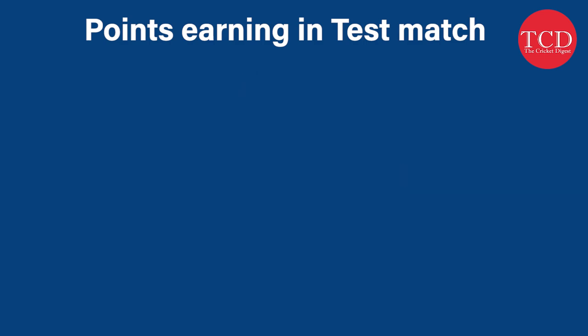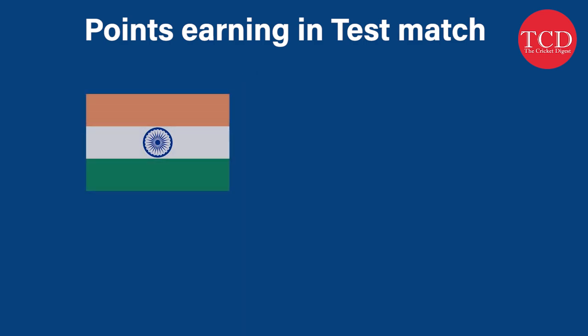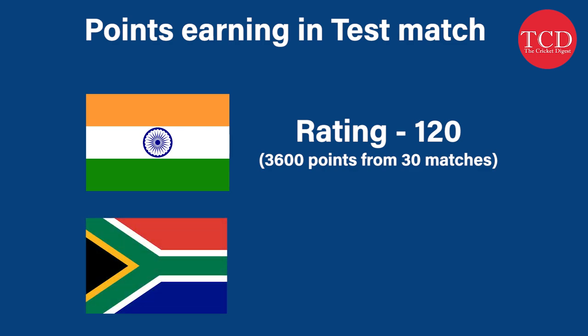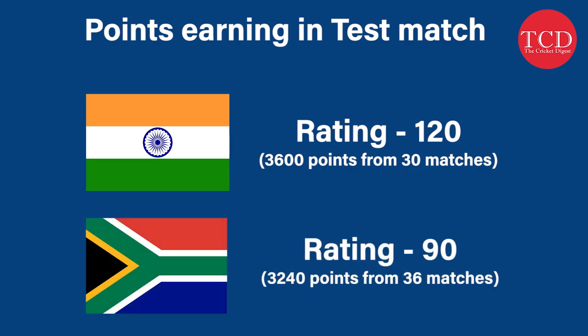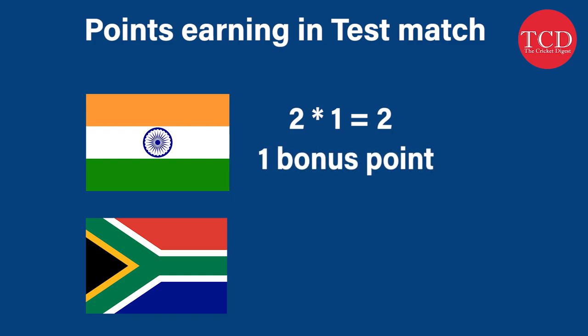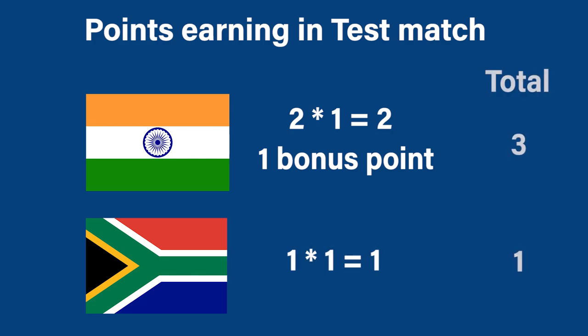Let's consider an example. At the start of the series, India has a rating of 120 and South Africa has 90. Let's assume that India wins the series 2-1. India gets 2 points for winning 2 matches and 1 bonus point for winning the series, whereas South Africa gets 1 point for winning 1 match.